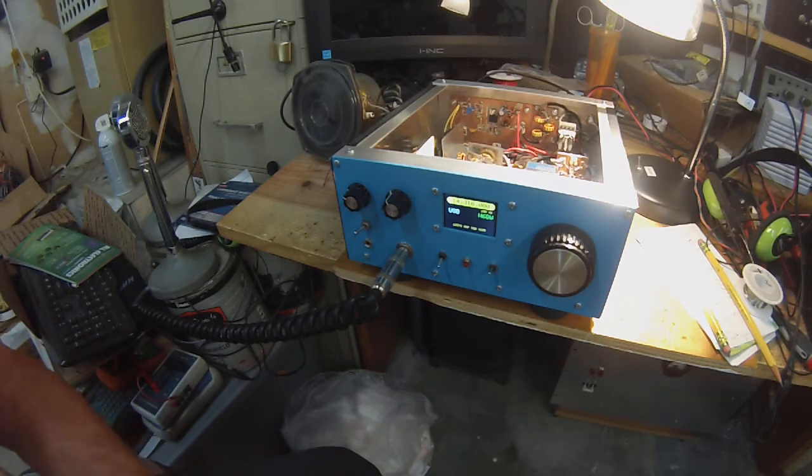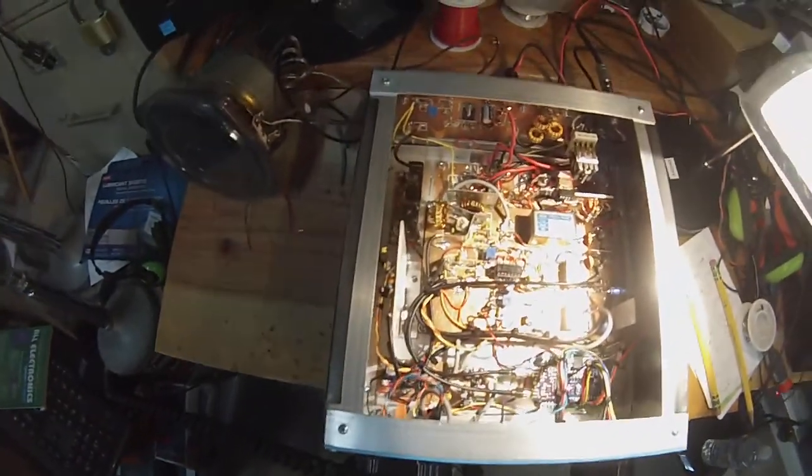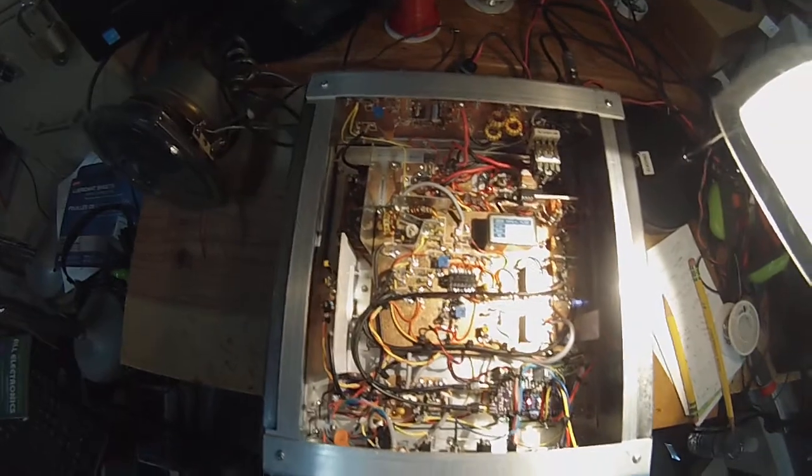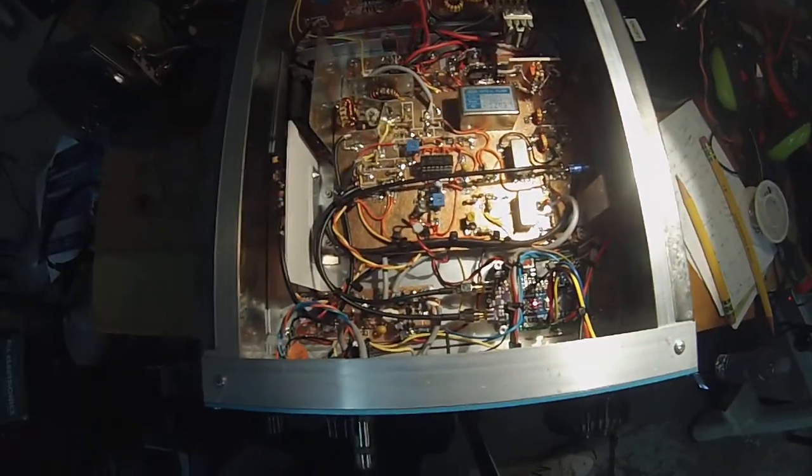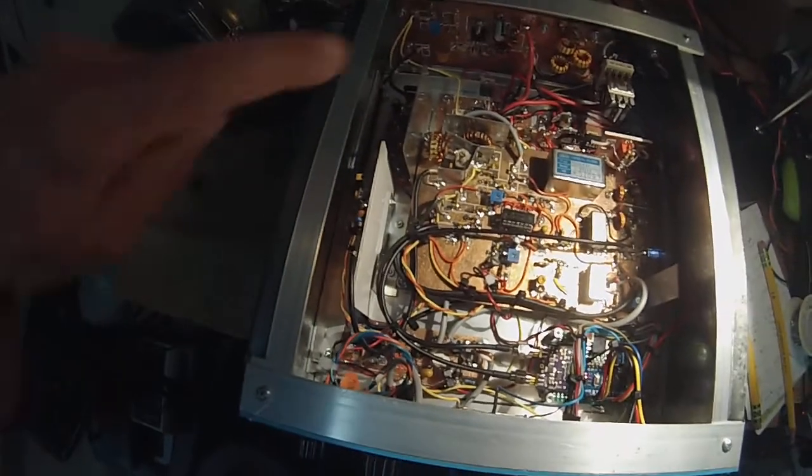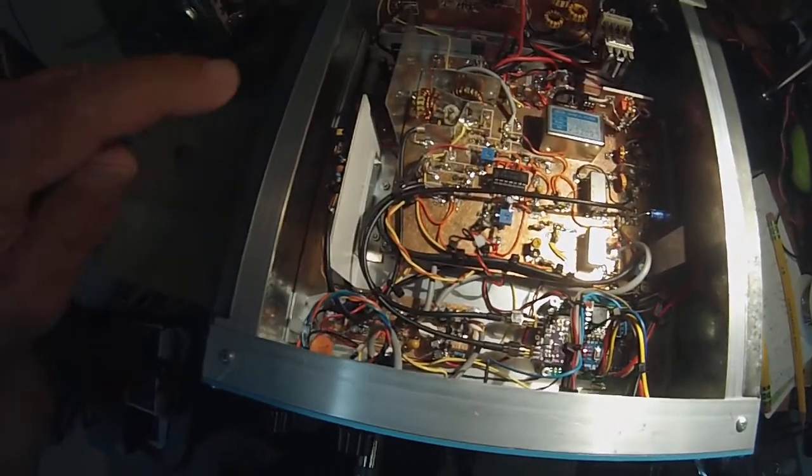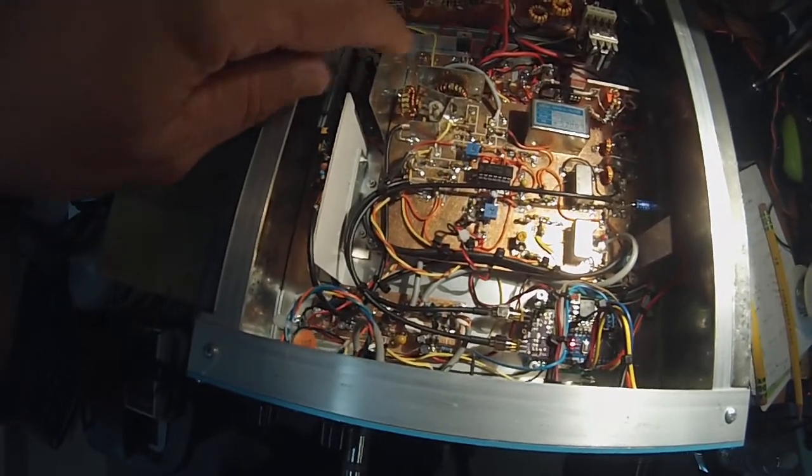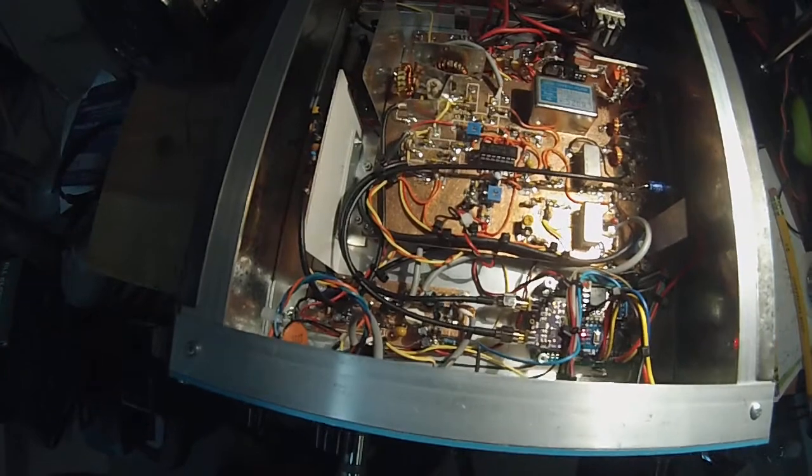This is Pete N6QW. I'm going to just pull this off and kind of cruise over the top of the rig here. Nine megahertz crystal filter over here, the attenuator relay control IRF510. This is the low pass filter. We have separate band pass filters on the transmit side and the receive side.